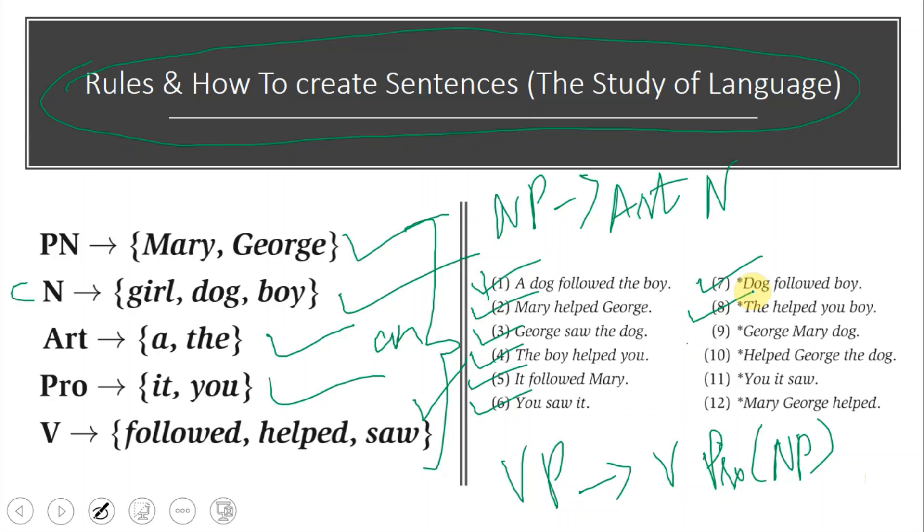Examples include: 'dog followed boy,' 'the helped you boy,' 'George Mary dog,' 'helped George the dog.' Two nouns cannot come together like 'George Mary dog'—three nouns cannot appear together in any sentence. An article and verb combination like 'the helped' cannot occur.